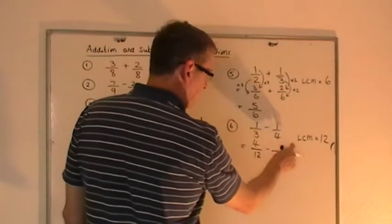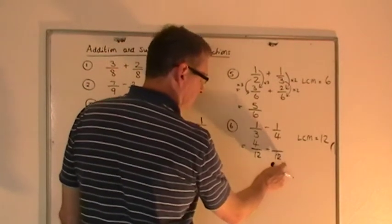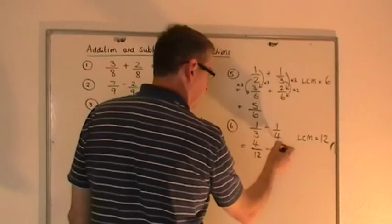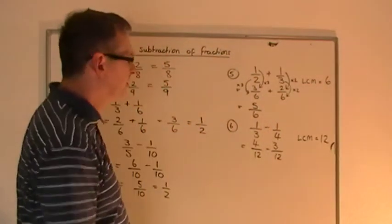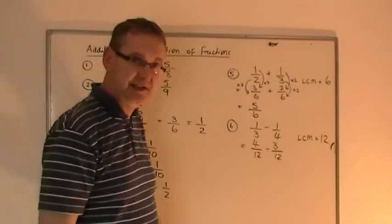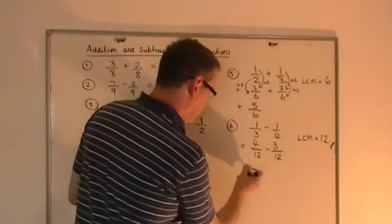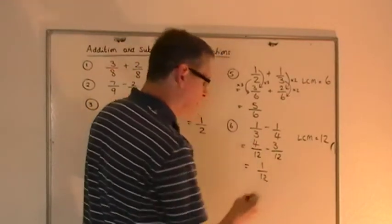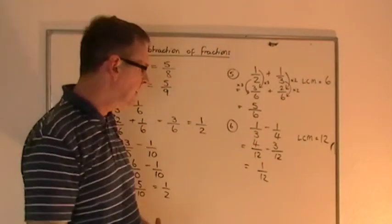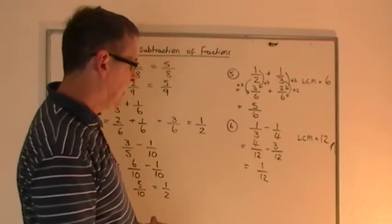So 1 third take away a quarter is exactly the same sum as doing 4 twelfths take away 3 twelfths. 4 twelfths take away 3 twelfths is 1 twelfth. And there you go. So there's the basic technique.